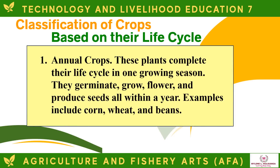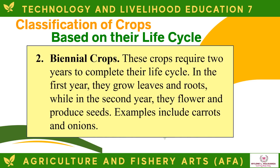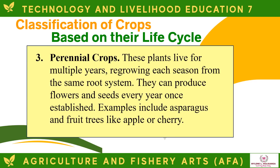The classification of plants based on their life cycle: Annual crops complete their life cycle in one growing season — they germinate, grow, flower, and produce seeds all within a year. Examples include corn, wheat, and beans. Biennial crops require two years to complete their life cycle; in the first year they grow leaves and roots, while in the second year they flower and produce seeds. Examples include carrots and onions. Perennial crops live for multiple years, regrowing each season from the same root system, and can produce flowers and seeds every year once established. Examples include asparagus and fruit trees like apple or cherry.